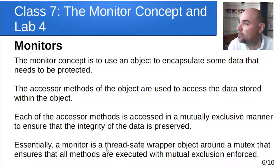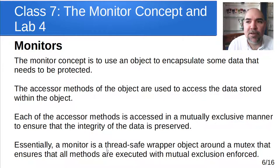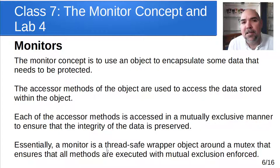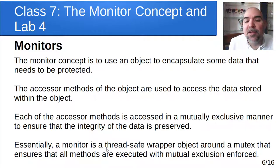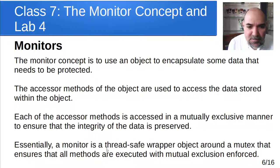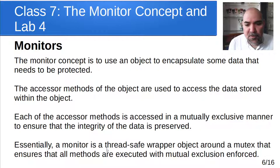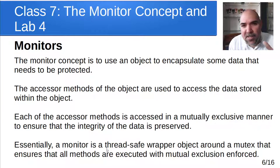We saw that previously with the bank account problem: you have a withdraw, you have a deposit, maybe a get balance method, but these are wrappers around how the data is accessed. So you can have a deposit going on in one thread on that same bank account, a withdrawal going on on the same bank account, accumulating interest going on on a different thread — querying the balance — all synchronized so you don't get corrupted data or lose one of those transactions, like we saw with that initial ornamental garden problem. The idea is we protect the data in accessor methods.